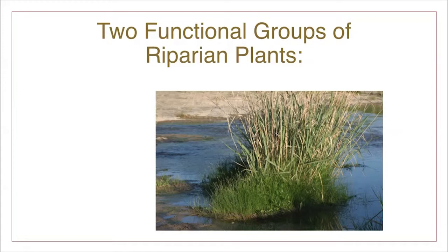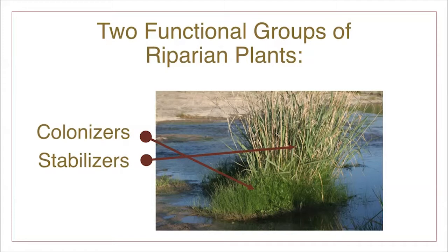Riparian plants can also be grouped by their function, as colonizers or as stabilizers. It takes a combination of colonizers and stabilizers to keep the riparian system functioning. Colonizers are usually weak-rooted plants that are quick-growing. Stabilizers come later and often have deep, dense, fibrous roots. The roots of a switchgrass plant, like the one shown here, can run 15 feet deep and have a density greater than 15 miles per cubic foot.